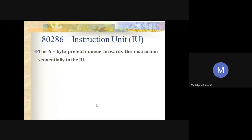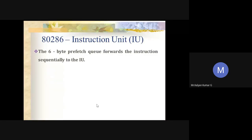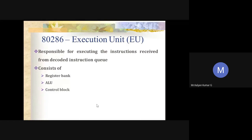The prefetched instructions arranged in the six-byte prefetch queue are forwarded sequentially to the instruction unit. The instruction unit receives instructions from the prefetch queue and decodes them one by one. The decoded instructions are latched onto the decoded instruction queue. The instruction unit decodes a maximum of three prefetched instructions and loads them into the decoded instruction queue for execution by the execution unit.